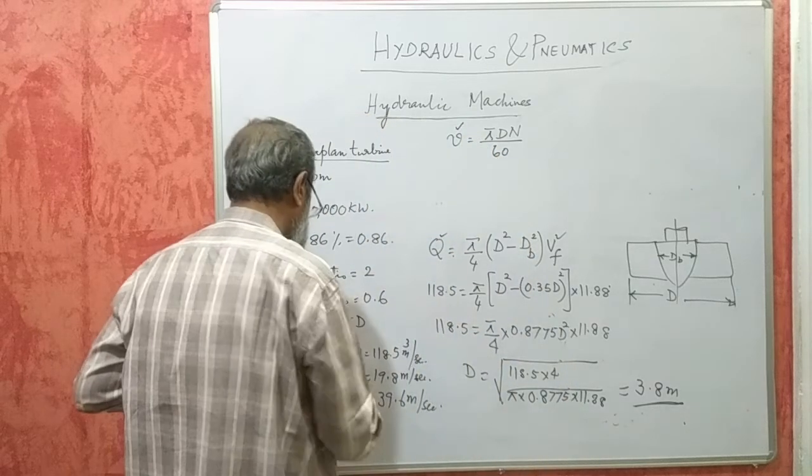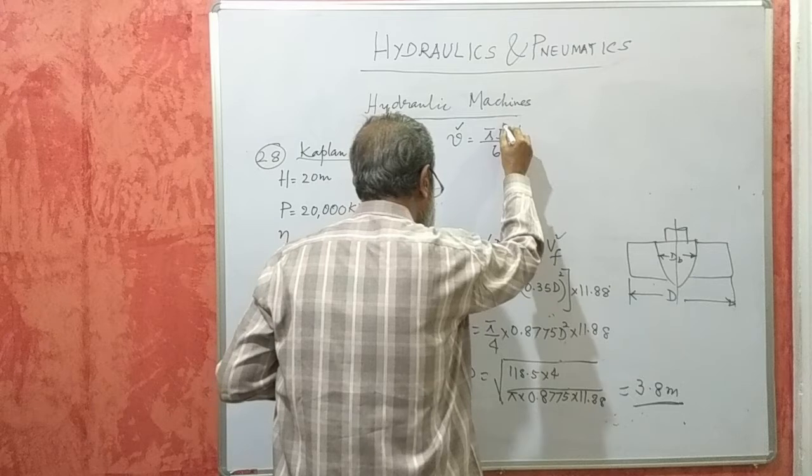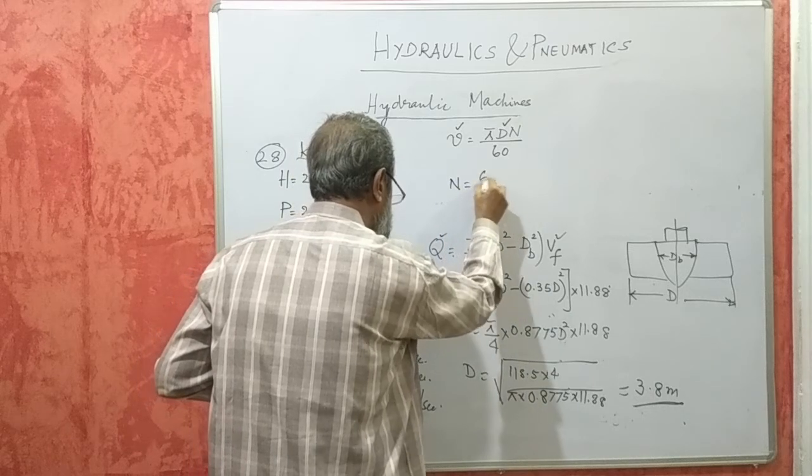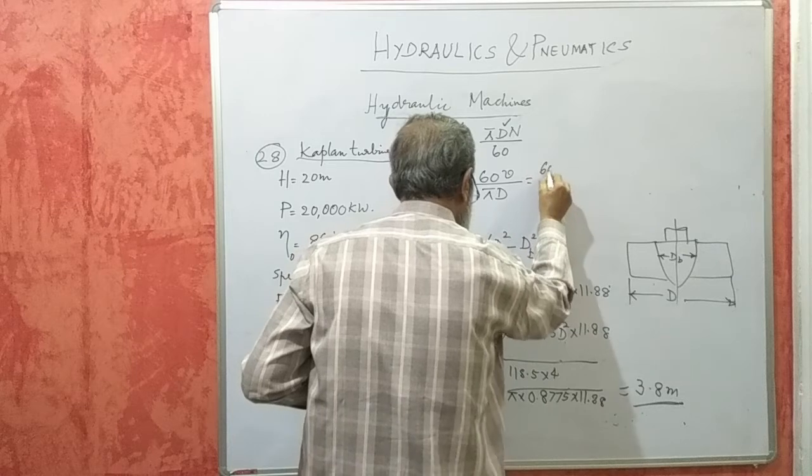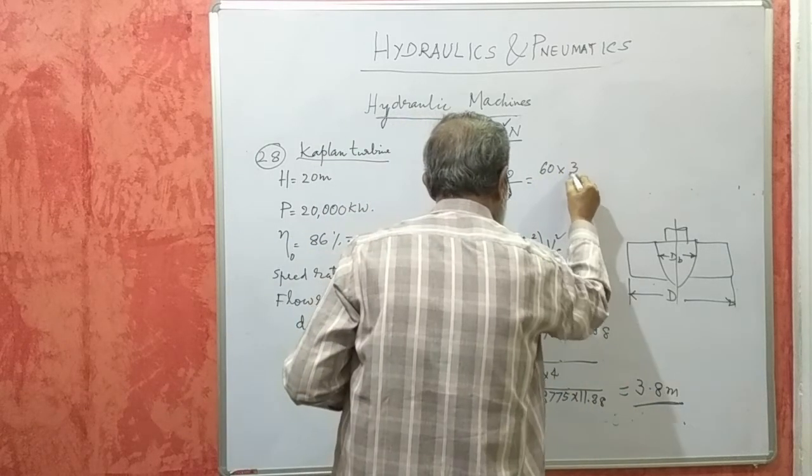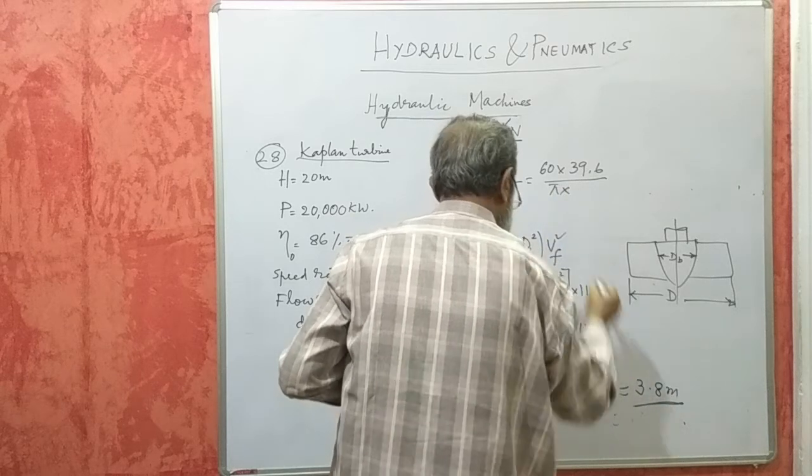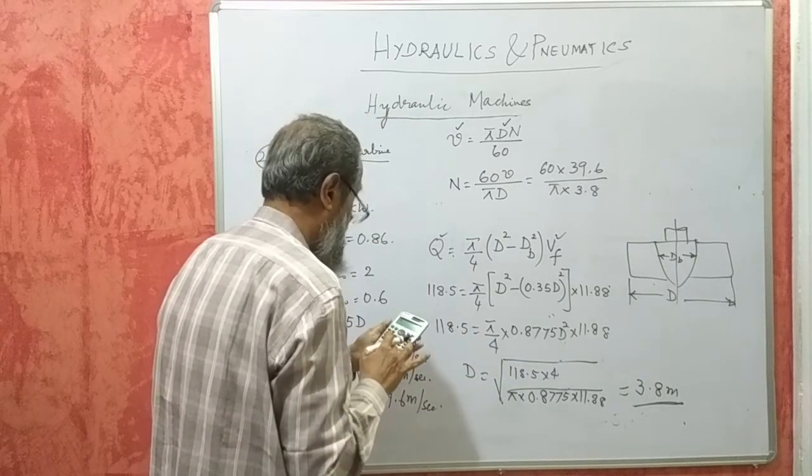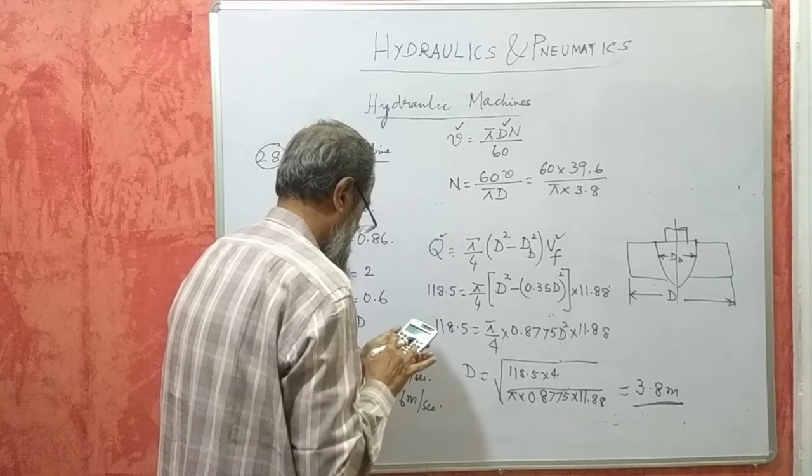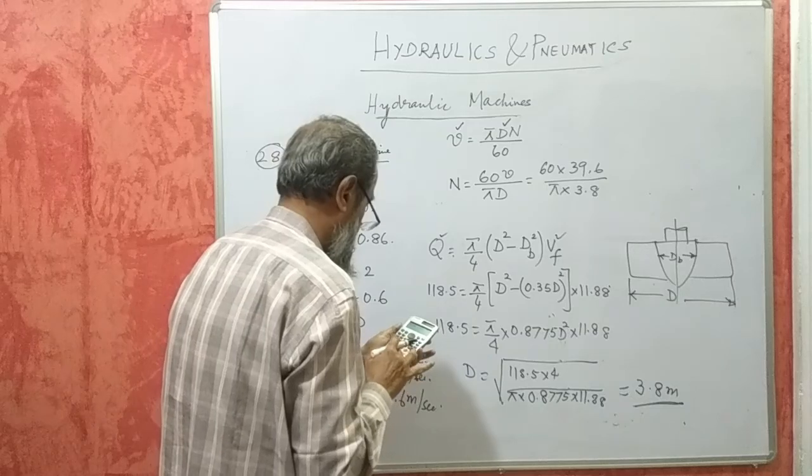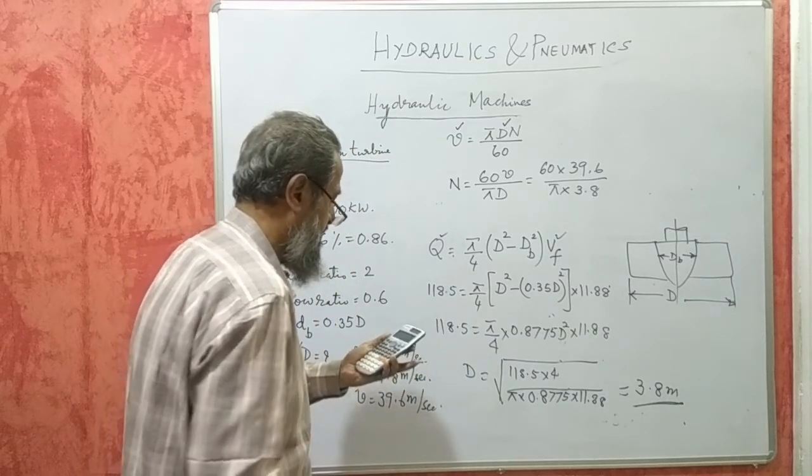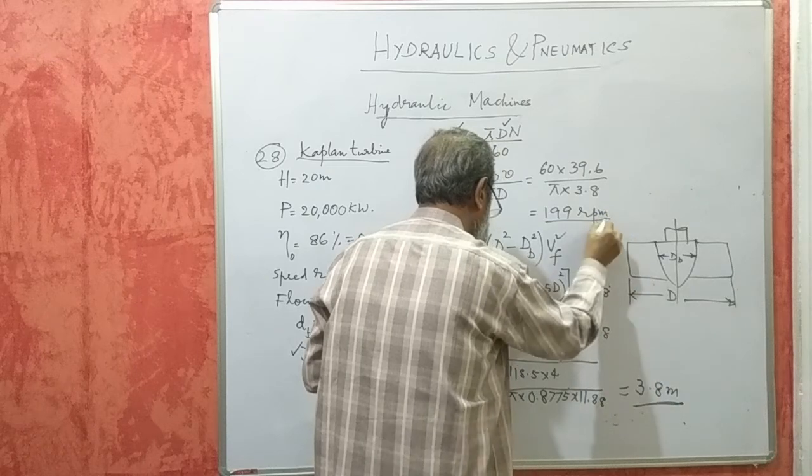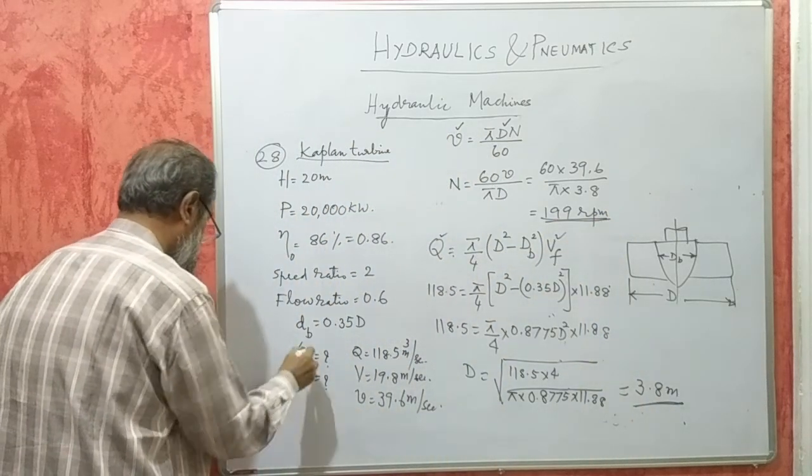Now we know v is 39.6, we know capital D is 3.8, substitute that and we have to get n. So n will be equal to 60 v divided by pi d, that is 60 into 39.6 divided by pi into 3.8, which gives me 199.027. You can take it as 199 RPM or 200 RPM, that is the speed of the turbine.